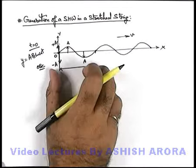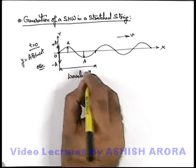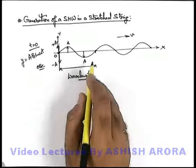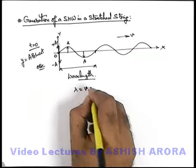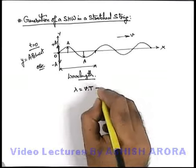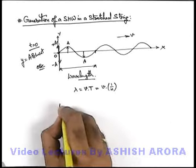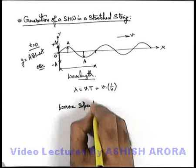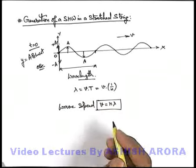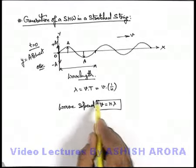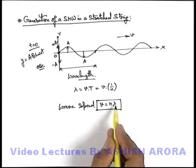The distance travelled by the wave during one oscillation is termed as the wavelength of the wave. Wavelength lambda can be given as wave speed multiplied by the time period of oscillation, which can be written as v multiplied by the reciprocal of frequency. So wave speed can also be expressed as v equals n lambda. This is a quite useful relation, and you may have studied it and worked on numericals based on this in your junior classes.